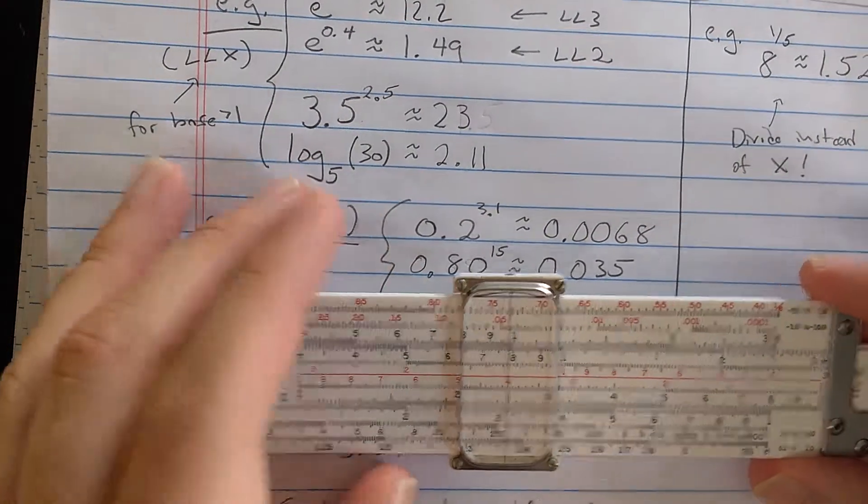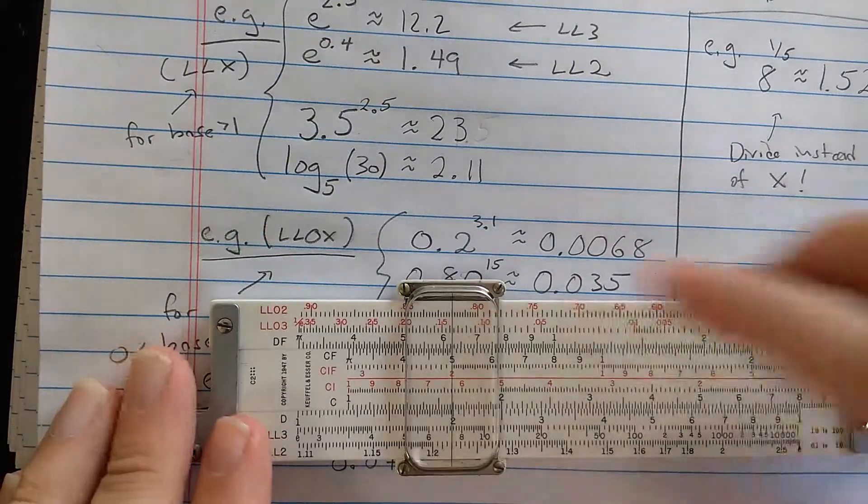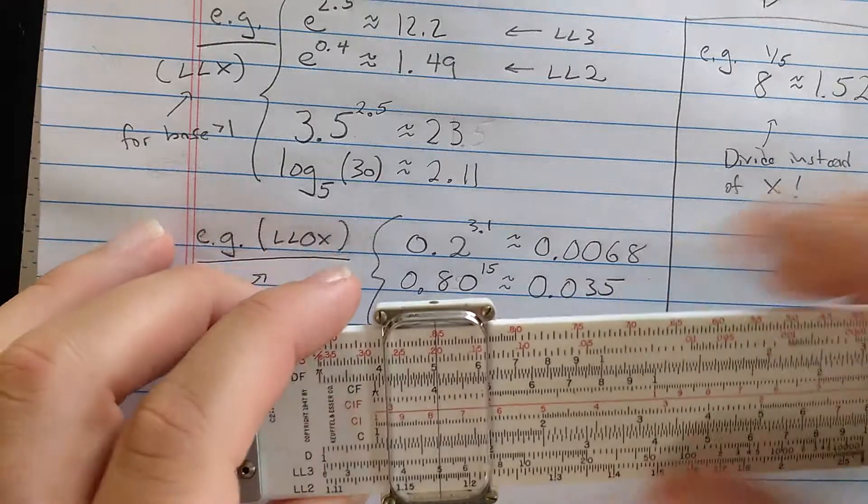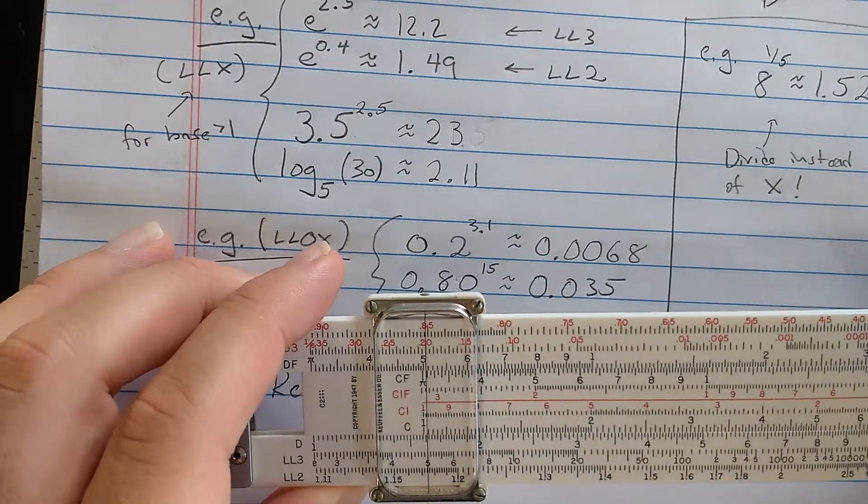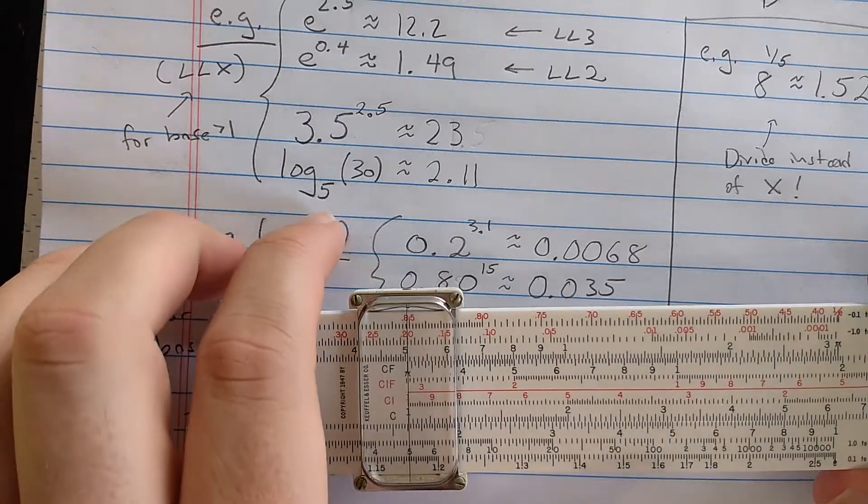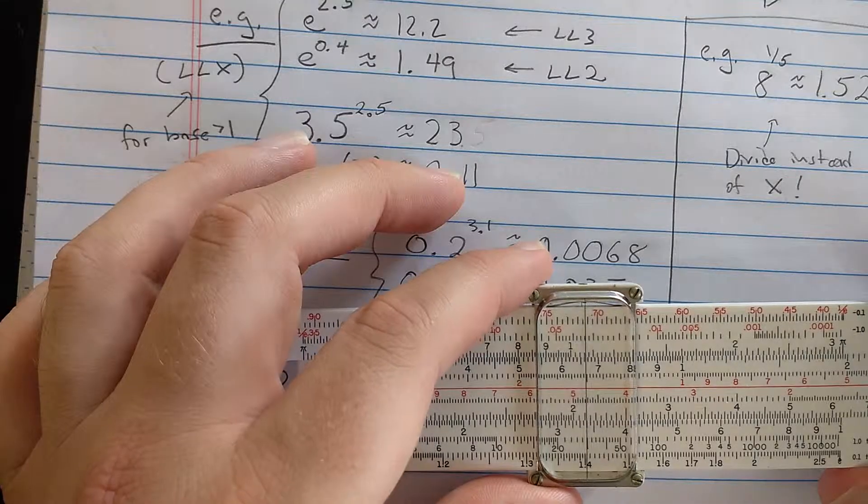You can do this in reverse to compute a logarithm. So let's find base 5 here. I want to compute log with base 5 of 30. So find base 5. I'm going to align in the same way, the left index of the C scale. And then, so the question is, what power should I put on 5 to get 30?